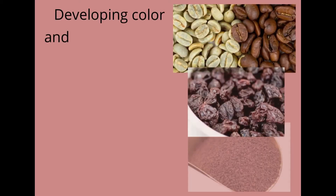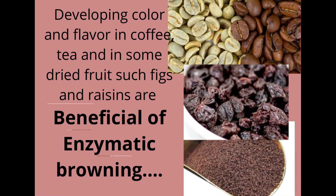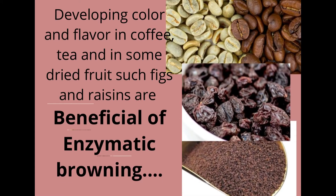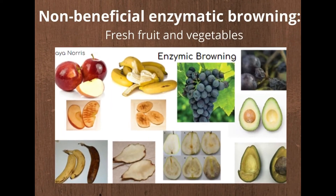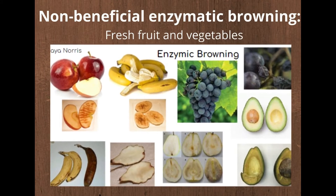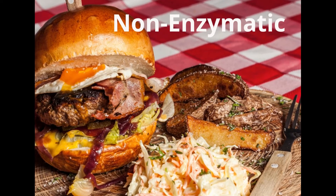Developing color and flavor in coffee, tea, and some dried fruits such as raisins and figs are examples of beneficial enzymatic browning. Non-beneficial enzymatic browning can be observed in fresh fruits and vegetables.